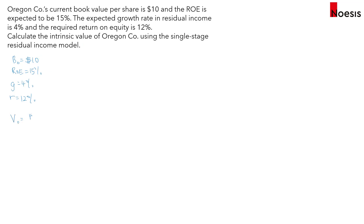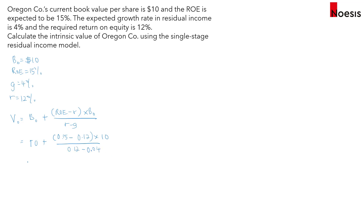Using the formula, V0 equals B0 plus (ROE minus R) times the initial book value per share, divided by R minus G. So: $10 plus (0.15 minus 0.12) times $10, divided by (12% minus 4%).